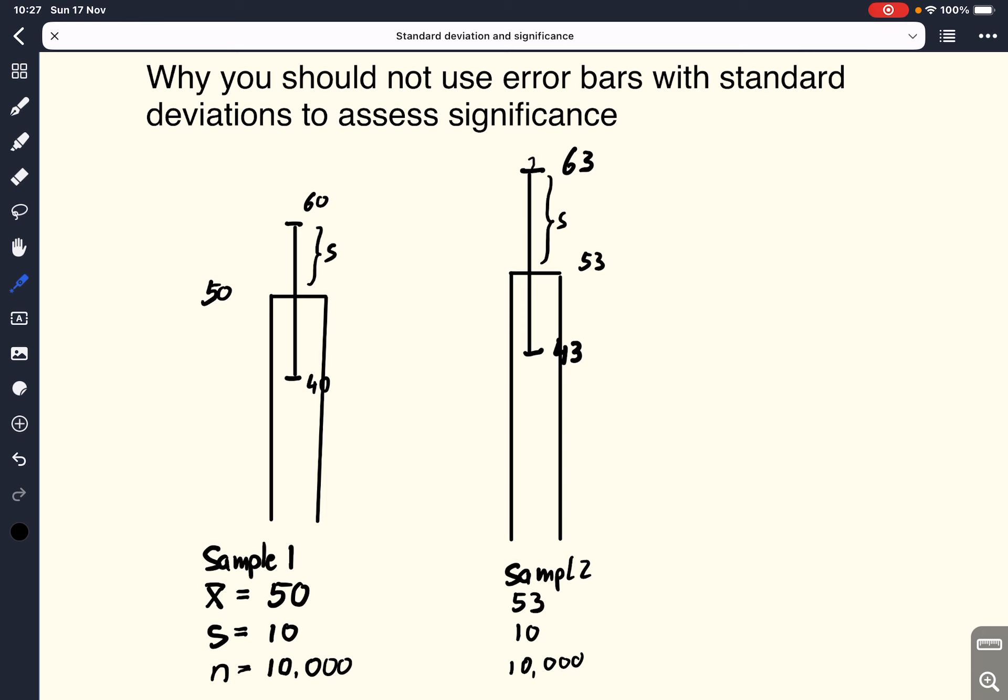And very often we see this represented by these bar graphs. So we've got the mean here, we've got an error bar and this error bar contains the standard deviation. So the error bars would be at 60 and 40. Now let's compare that to sample 2, where we have a mean of 53. We also have a standard deviation of 10, so the error bars would go from 63 to 43, and we have a large sample size again of 10,000.